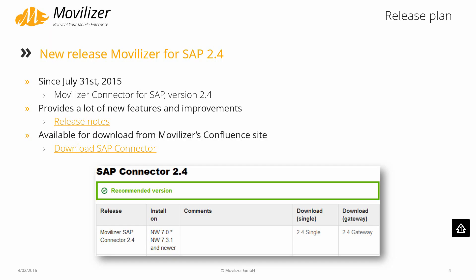The Mobilizer for SAP 2.4 release has been out since July 31st, 2015. Here on the slides we have a link to the release notes and to the download of the SAP connector. Currently the latest service pack is service pack 2, which is our recommendation if you start a new Mobilizer project.